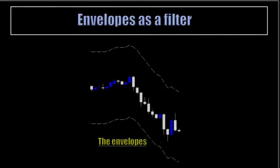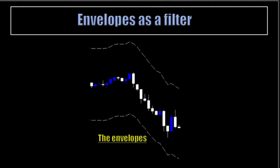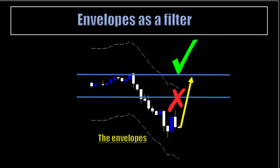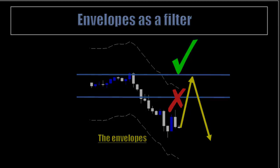Envelope as a filter on the chart. On this chart, I have drawn two horizontal lines. The first horizontal line is inside the envelope. If you enable the envelope as a filter, it will not take this level — price will go through this level and go to the one that is outside the envelope and then take it. Any level that is inside the envelope will be filtered and won't be taken by the companion.